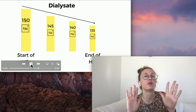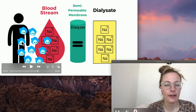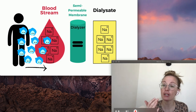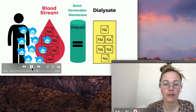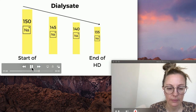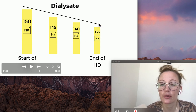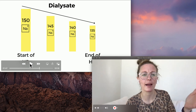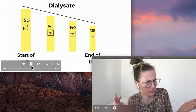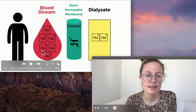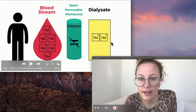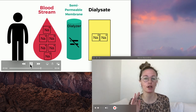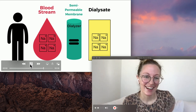Water moving into the intravascular space also increases blood pressure — great for patients who have hypotension during dialysis, helping keep their BP up and allowing fluid removal. Then nearing the end of dialysis we lower the dialysate sodium to 135, because we don't want patients to leave with a serum sodium of 150 — that's too high. With diffusion, sodium now moves back across the dialyzer from the bloodstream to the dialysate, correcting the level. And that's the end of dialysis.